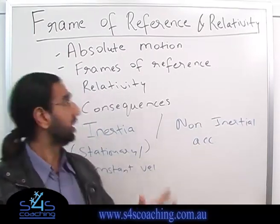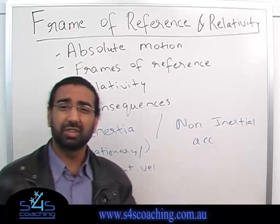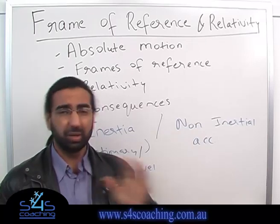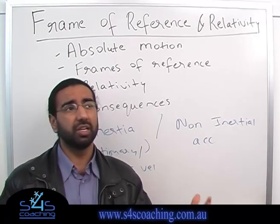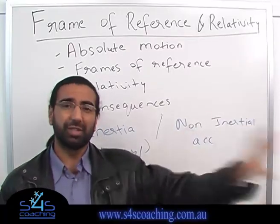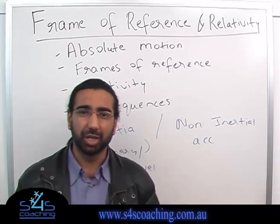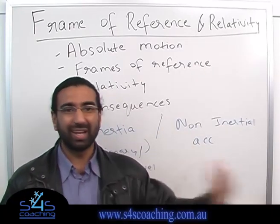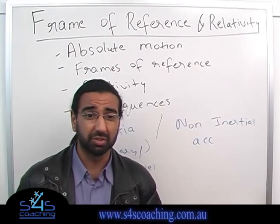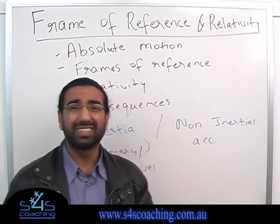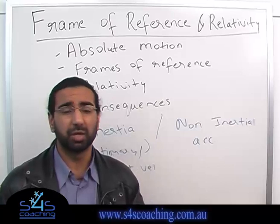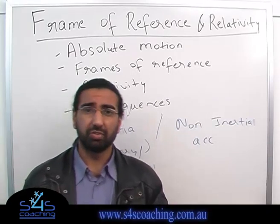In fact, absolute motion itself doesn't really exist, because to determine if I am moving, I need to pick a frame of reference and see if I have moved with respect to that. For example, if I want to see if I am moving, I'll pick a tree, and if my position with respect to the tree has changed, it means I'm actually moving. For absolute motion to exist, we would need an absolute frame of reference. If ether existed, it could be considered one, but as explained previously, the Michelson-Morley experiment led to the theory of ether being rejected.